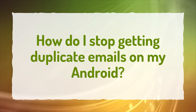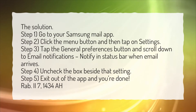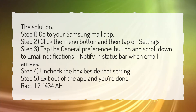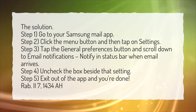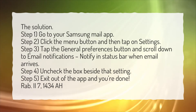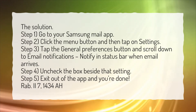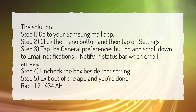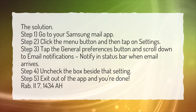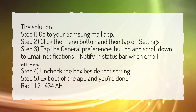How do I stop getting duplicate emails on my Android? The solution: Step 1, go to your Samsung Mail app. Step 2, click the menu button and then tap on Settings. Step 3, tap the General Preferences button and scroll down to Email Notifications — 'Notify in status bar when email arrives.' Step 4, uncheck the box beside that setting. Step 5, exit out of the app and you're done.